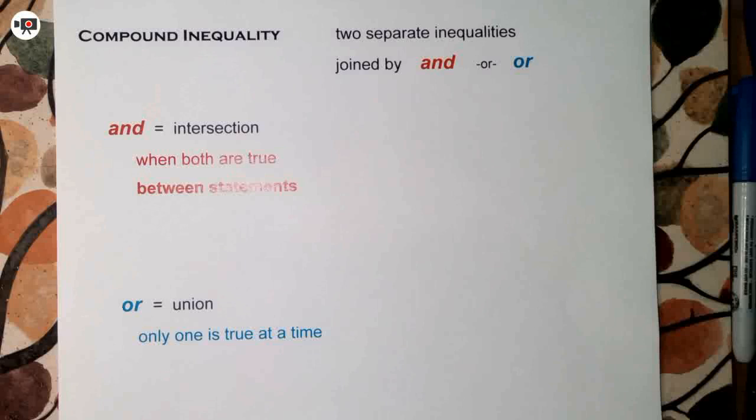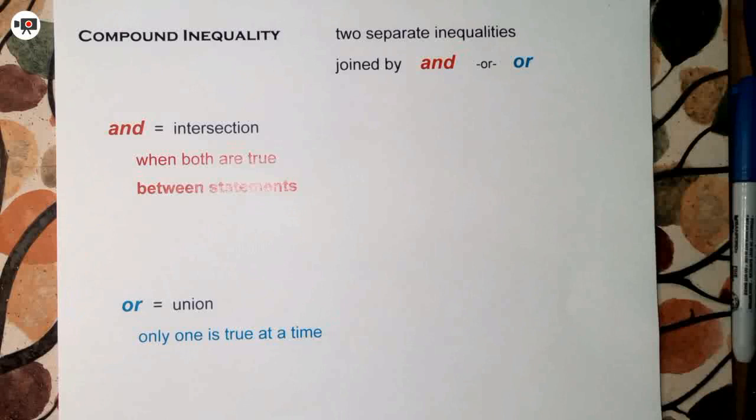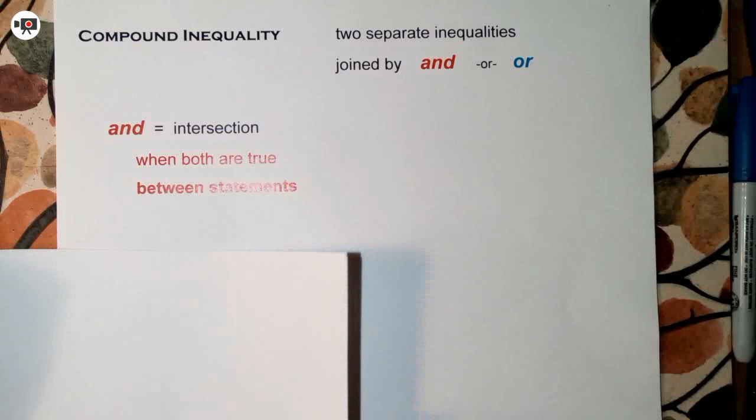AND is going to be called an intersection — both statements are true at the same time. OR is going to be called a union, and only one statement is true at a time. So let's look first at AND.